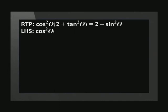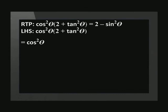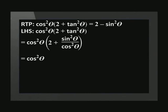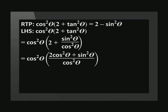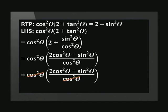To begin our proof, we need to take the more complicated side and write it on its own so that we can manipulate it. The left-hand side is cos squared theta times (2 plus tan squared theta). Standard practice is to change the expression so that it just has sin and cos in it. We use the quotient identity to change tan squared theta to sin squared theta over cos squared theta, giving us cos squared theta times (2 plus sin squared theta over cos squared theta). The common denominator inside the brackets will be cos squared theta, giving us (2 cos squared theta plus sin squared theta) all over cos squared theta. We can cancel cos squared theta and get 2 cos squared theta plus sin squared theta.